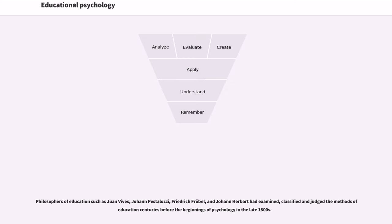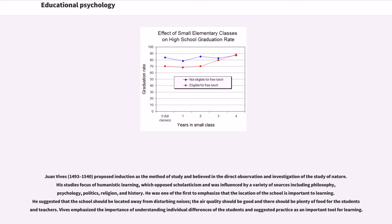Philosophers of education such as Juan Vives, Johann Pestalozzi, Friedrich Frobel, and Johann Herbart had examined, classified, and judged the methods of education centuries before the beginnings of psychology in the late 1800s. Juan Vives (1493–1540) proposed induction as the method of study and believed in direct observation and investigation of nature. His humanistic learning opposed scholasticism and was influenced by philosophy, psychology, politics, religion, and history. He was one of the first to emphasize that the location of the school is important to learning, and he emphasized understanding individual differences among students and the importance of practice as a learning tool.